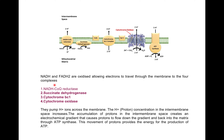All these complexes pump H⁺ ions across the membrane. The H⁺ ion or proton concentration increases in the intermembrane space, while the mitochondrial matrix is on the other side. The accumulation of protons in the intermembrane space creates an electrochemical gradient that causes protons to flow down the gradient and back into the mitochondrial matrix through ATP synthase. This movement of protons provides energy for the production of ATP.